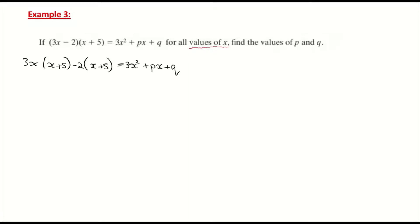When I multiply in my bracket, I multiply 3x by x to get 3x². I multiply 3x by 5 and get +15x. I multiply -2 by x and -2 by 5 to get -2x - 10. And that is equal to 3x² + px + q.